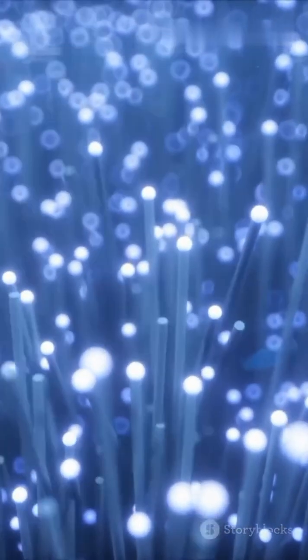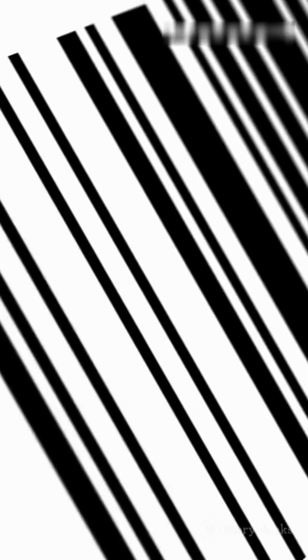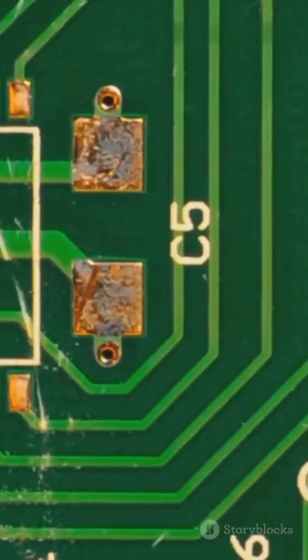Photodiodes don't just see the world. They digitize it. They're in solar panels, barcode scanners, fiber optics, and more. Anywhere light meets electronics, photodiodes are doing the translation.